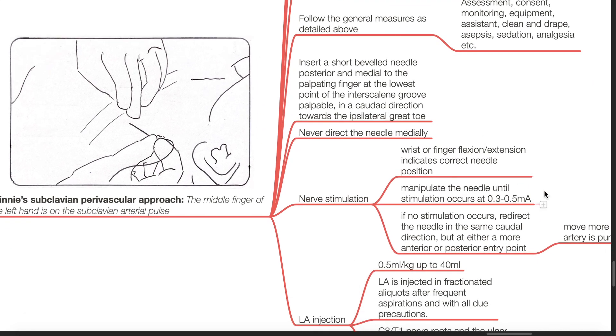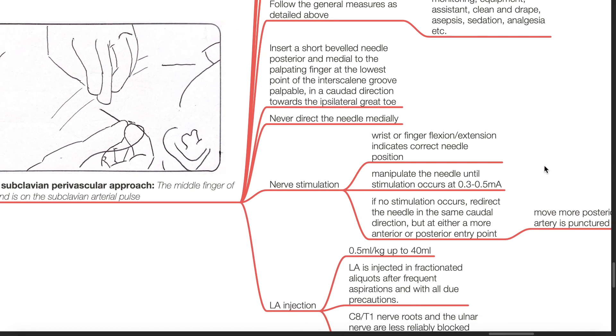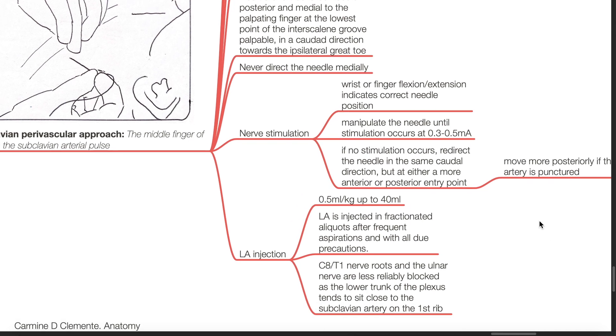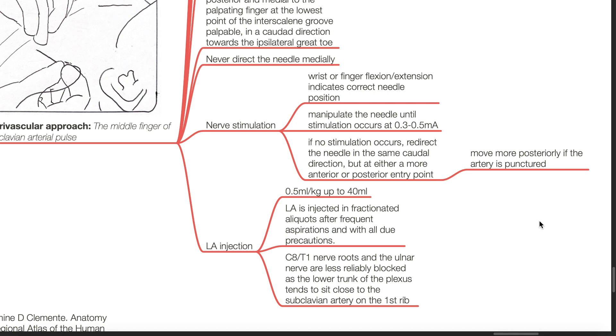Nerve stimulation: wrist or finger flexion or extension indicates correct needle position. Manipulate the needle until stimulation occurs at 0.3 to 0.5 milliamps. If no stimulation occurs, redirect the needle in the same caudal direction but at either a more anterior or posterior entry point. Move more posteriorly if the artery is punctured.